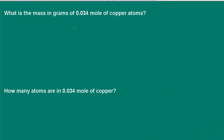Here we're asked: what is the mass in grams of 0.034 moles of copper atoms? We're given 0.034 moles and our desired unit is grams. When converting from grams to moles or moles to grams, you're going to need the molar mass. In this case, the molar mass of copper. We go to the periodic table and find that the molar mass of copper is 63.55 grams.